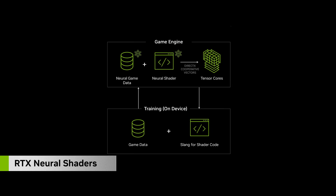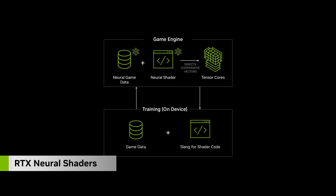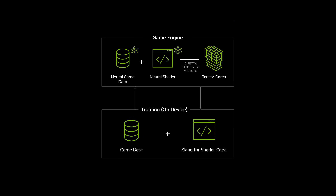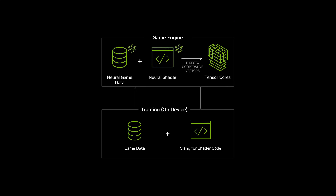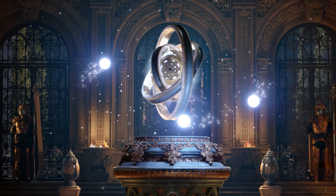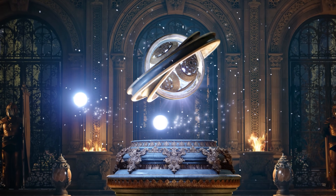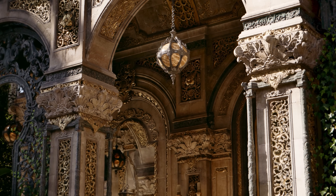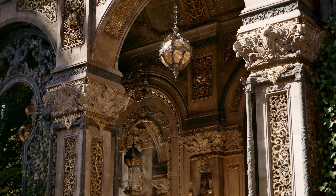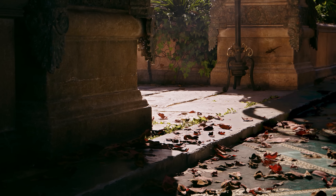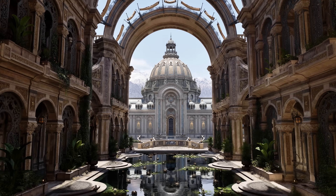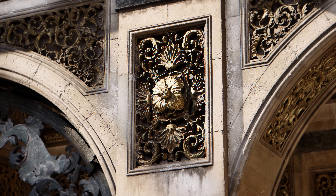The first of these new innovations included in the kit is RTX Neural Shaders, a new programming model that lets developers train and use tiny AI networks inside shaders. This allows hyper-complex assets to be rendered in real-time, bringing games closer to reproducing the high-quality materials you see in big-budget CGI movies. The applications of Neural Shaders are countless, from materials, to lighting, to geometry, and more.